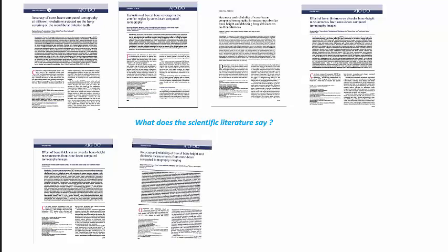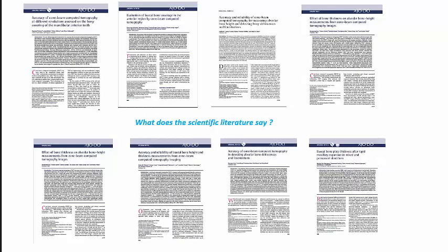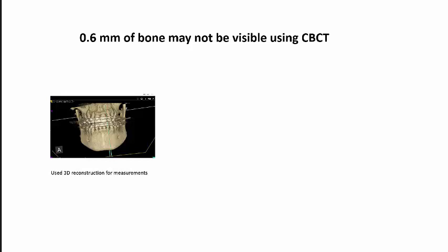What does the literature actually say? There's plenty of refereed scientific literature discussing how accurate cone beam CT is, especially for orthodontic evaluations. We're going to assume that 0.6 millimeters of bone may not be visible using cone beam CT. When you look at these studies, I think they're missing the point somewhat in that some of them use 3D reconstructions to measure the accuracy of cone beam CT in measuring the bone. 3D reconstructions are not where the diagnosis occurs — it's a nice tool to look at structures relative to each other, but it's not accurate for measuring bone. You have to look at the individual slices.